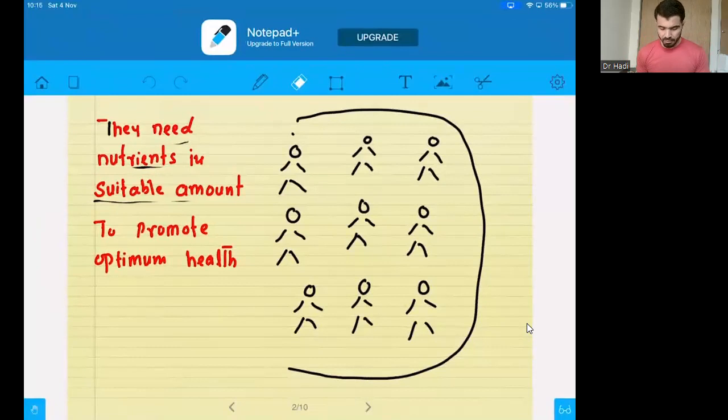The diagram in front of you contains some group of people. There are a lot of people in your city, and all of these people, they need some kind of nutrients to sustain their life. You, I, every one of us, we need food, nutrition to sustain our life, to have a good life. What is mentioned here in front of this in red is that they need nutrients in suitable amount.